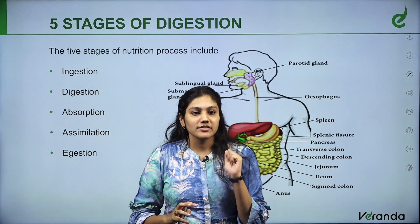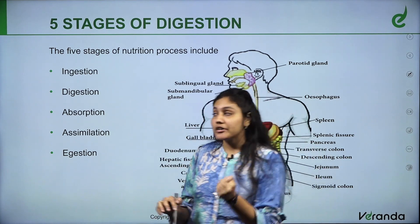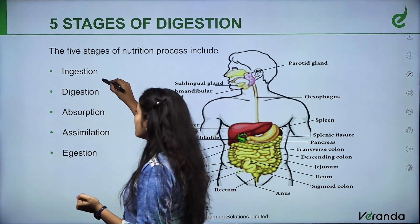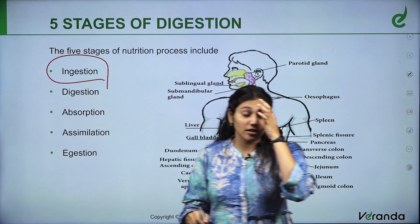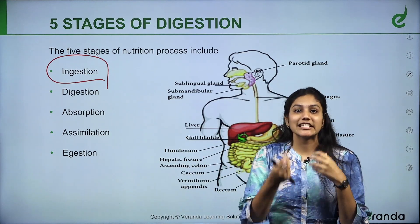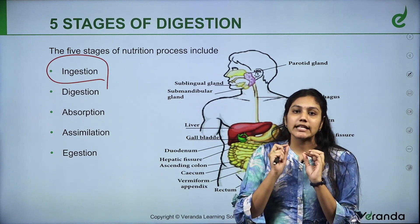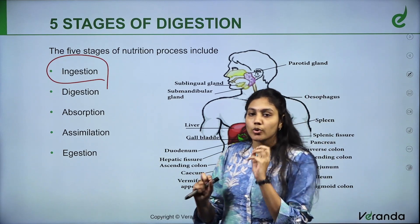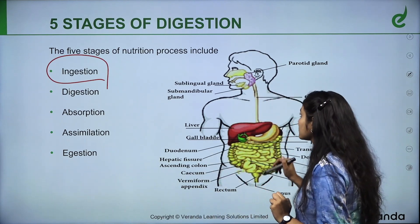So, five stages are pretty clear for digestion. First, if we see — ingestion. The process where we eat food is called ingestion. So, ingestion occurs in the mouth.